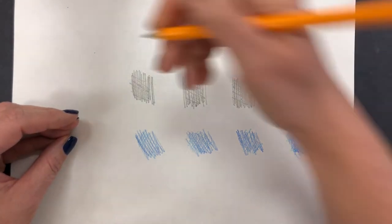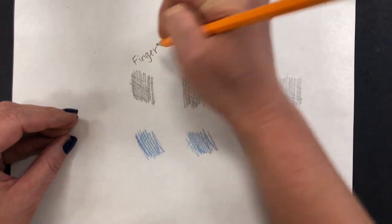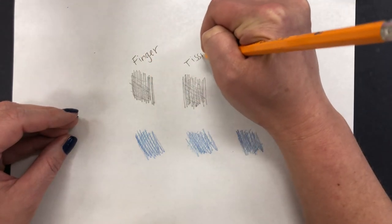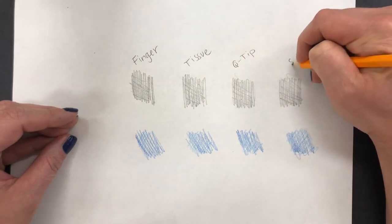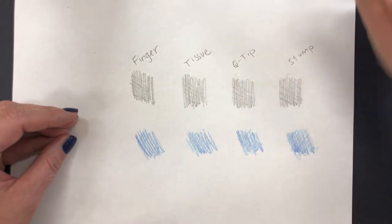Let's start first and try. We'll label this one finger, this one tissue, q-tip, and stump if you've got one.